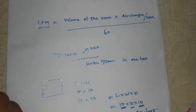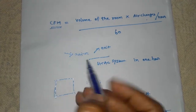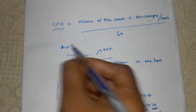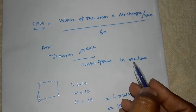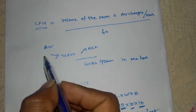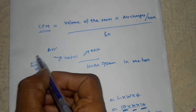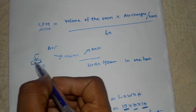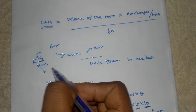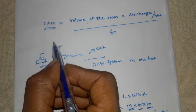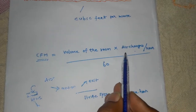Air changes per hour refers to how many times the air enters or exits from the HVAC system in one hour. In an HVAC system, air enters or exits from the evaporator coil — that number per hour is called air changes per hour.